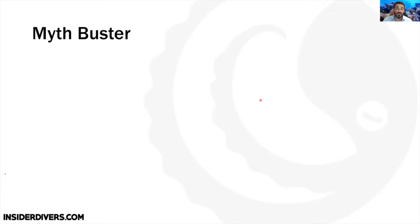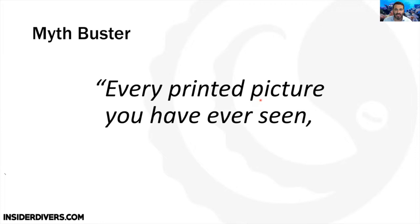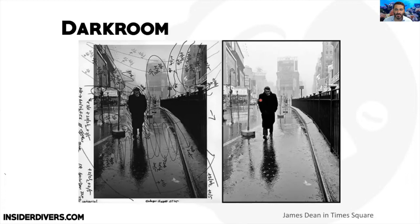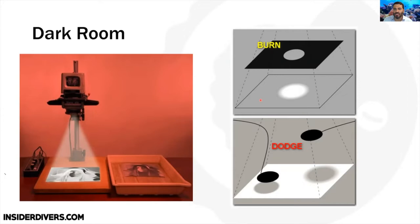Let me bust a myth: when people start with underwater photography they're often surprised how intensively we use editing software. Any photo you've ever seen in any magazine or website has very likely been edited — I'd say 99% sure. This was true even before digital photography. Here's a famous photograph of James Dean in Times Square showing what a darkroom editor did — back in the day, editors would burn and dodge the picture to make certain areas brighter or darker.